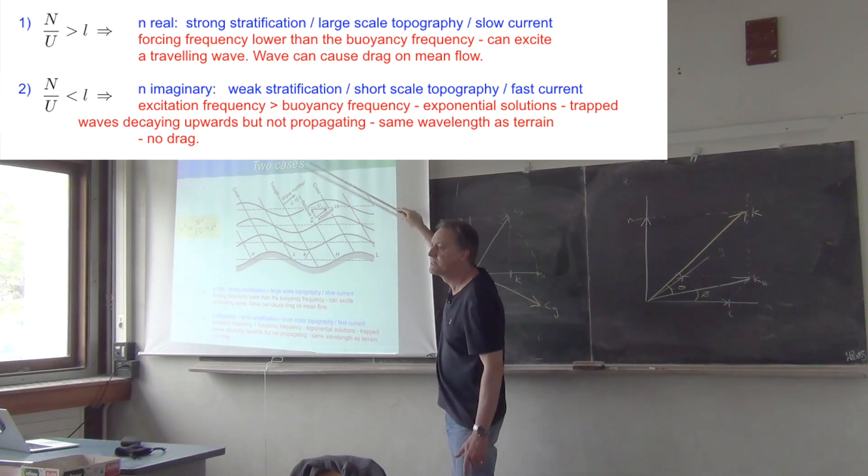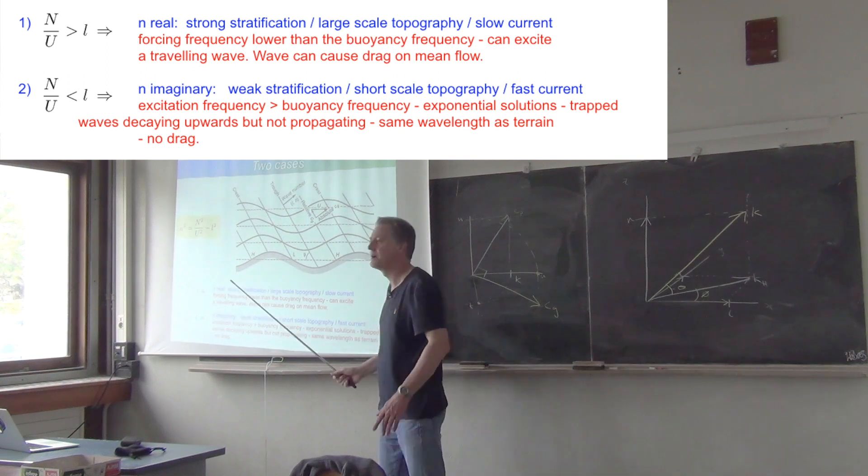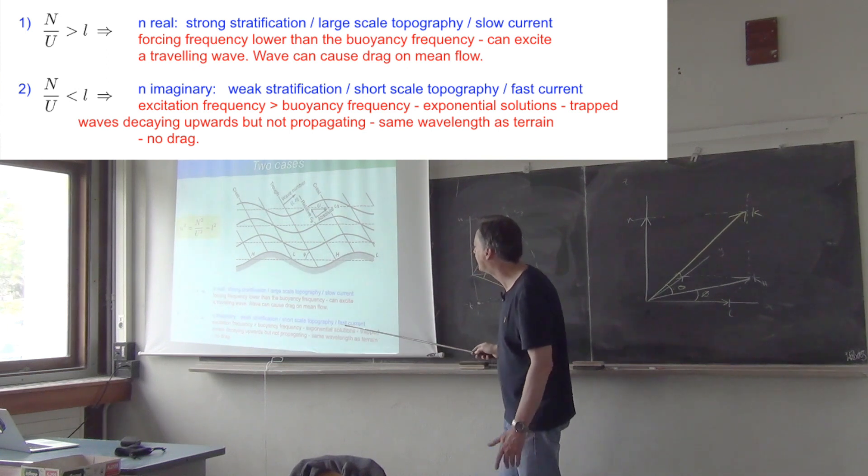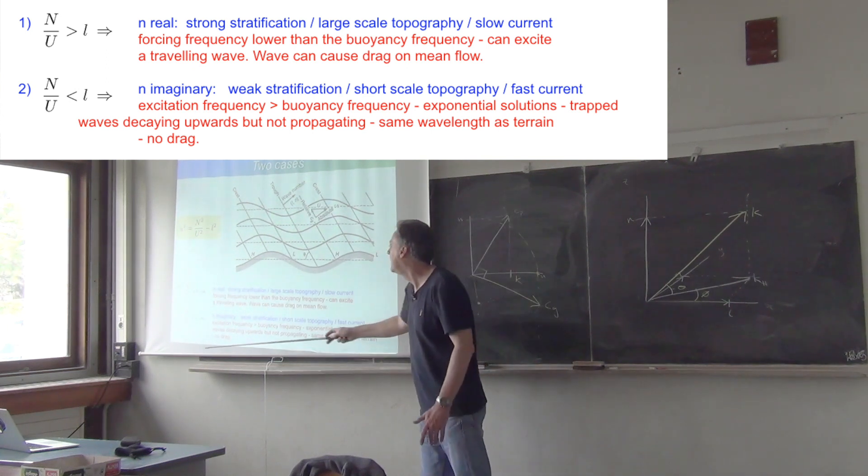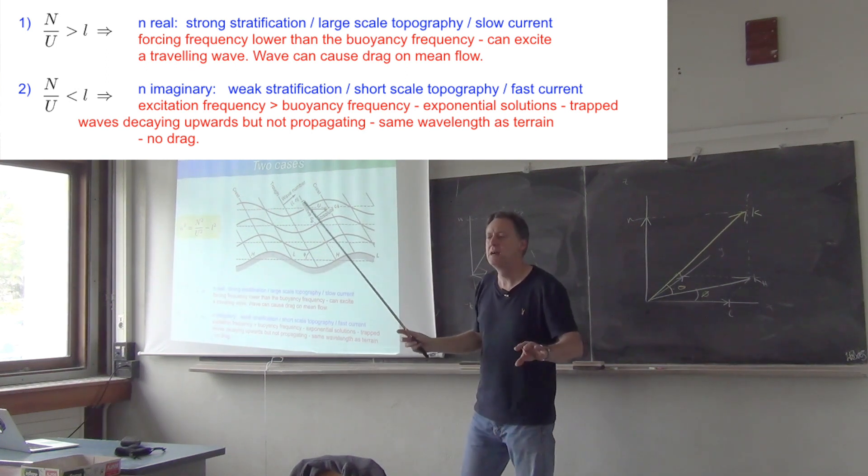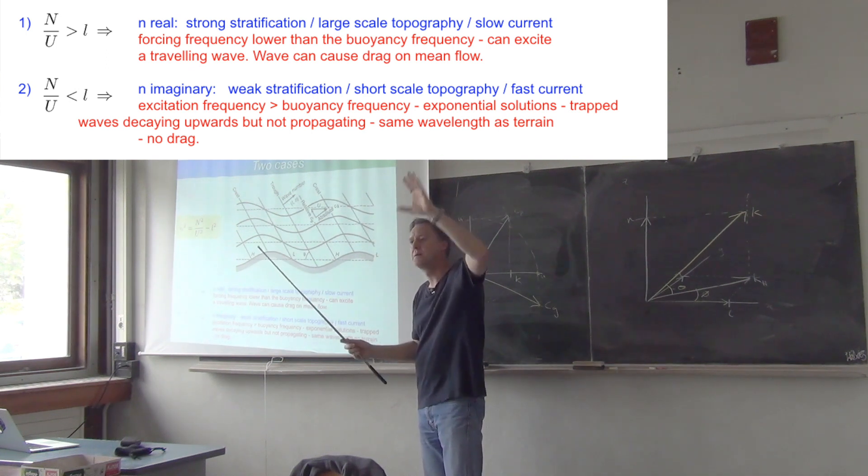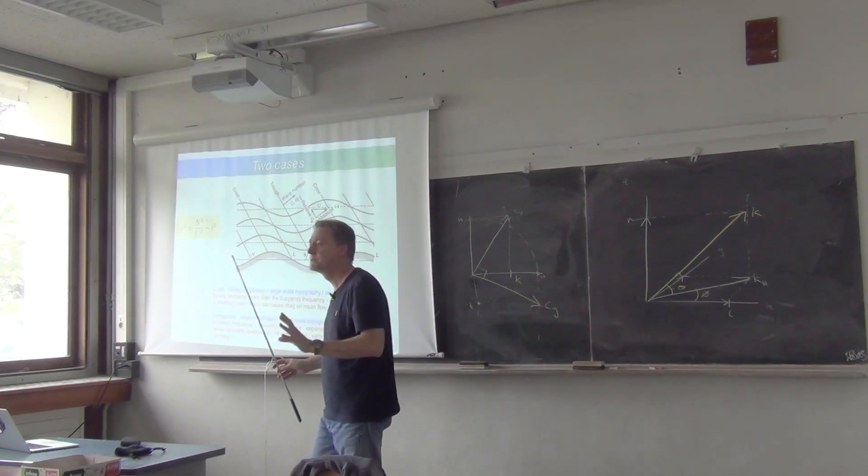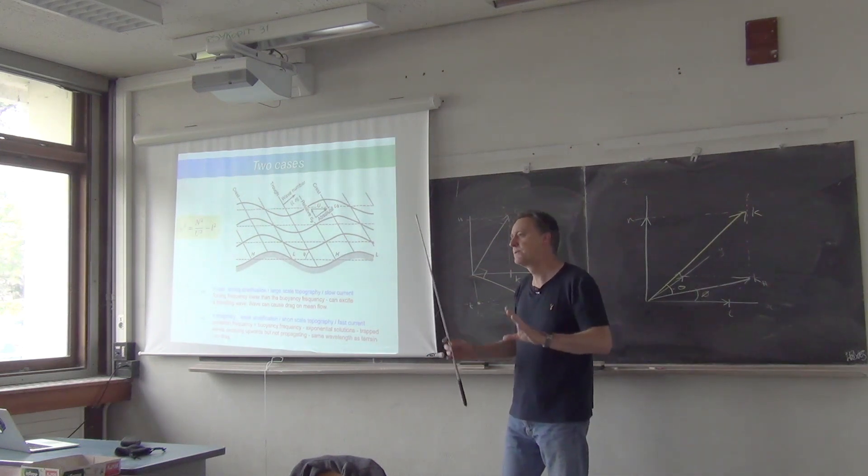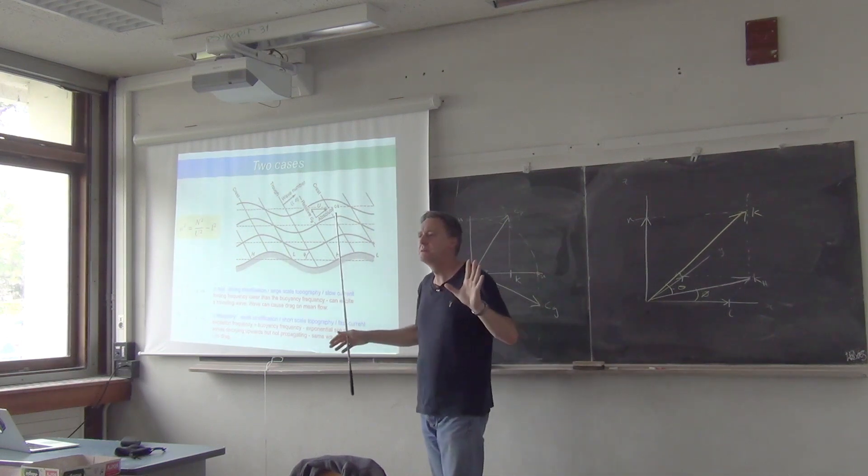On the other hand, if n is imaginary, you have the opposite conditions - weak stratification or small scale topography or a fast current. In that case, you have a boundary layer which is isolated and you don't have an effective way of exercising friction on the depth-integrated flow. So internal waves and the conditions in which they are generated are important for the large-scale ocean circulation, and this is one example of that type of consideration.